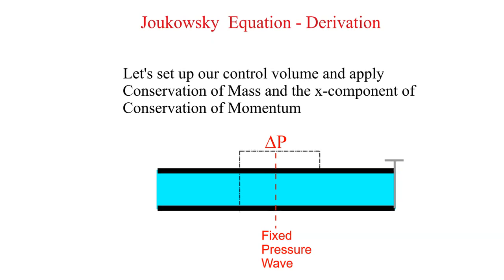We draw the control volume around the fixed pressure wave. The velocity of the water entering the control volume on the left hand side is V0 plus c. The velocity of the water exiting the control volume on the right hand side is c. Other parameters are indicated as shown below.